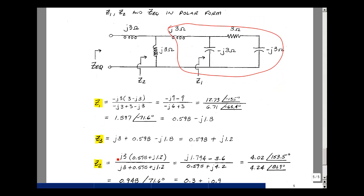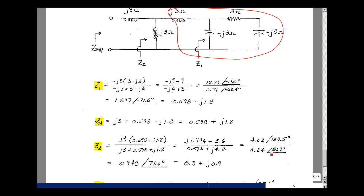Multiplying the first term through, I get j1.794, then a j-squared giving a minus sign, and 3 times 1.2 is 3.6. Adding the two imaginary parts gives j4.2, and the real part stays the same. Entering into the calculator, I get a magnitude a little bigger than 3.6 — which is 4.02 — and the angle is in the second quadrant with a negative real part and positive imaginary part: 153.5 degrees. The denominator magnitude is a little bigger than 4, and the angle is very close to 90 degrees at 81.9 degrees. The overall magnitude is the ratio: 0.948, and the angle is 153.5 minus 81.9, giving 71.6 degrees.